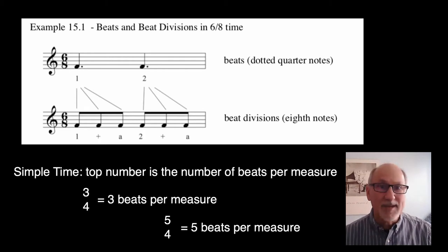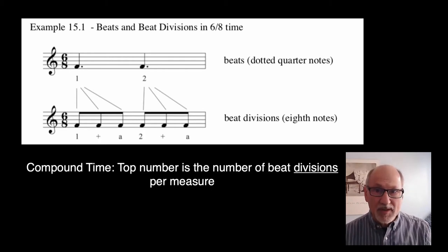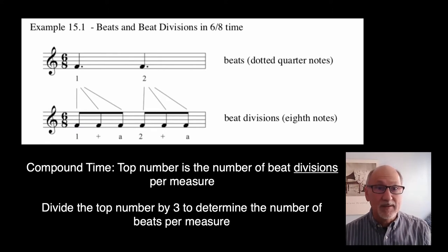However, in compound time, the top number of the time signature tells us the number of beat divisions per measure, not the number of beats. And therefore, we must divide the top number by 3 to ascertain the number of beats per measure.